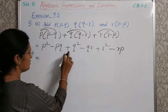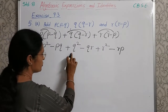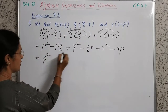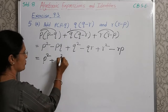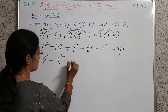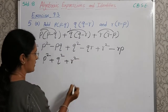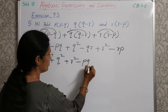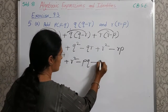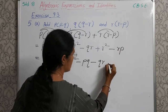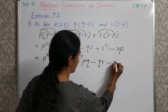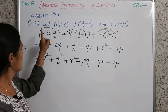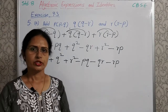So we will write first P square, then plus Q square, then plus R square: P square plus Q square plus R square. After that, minus PQ, then minus QR, and then minus RP. And this is the answer for this first question.